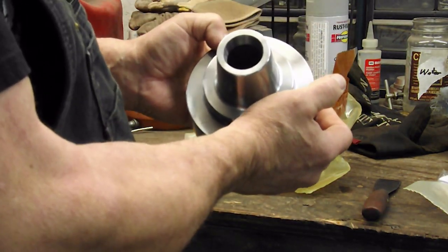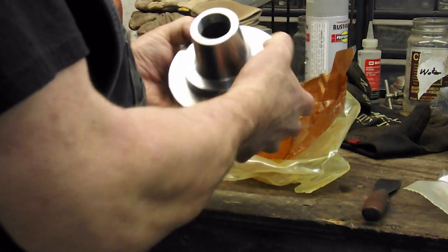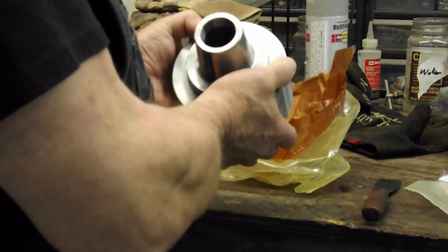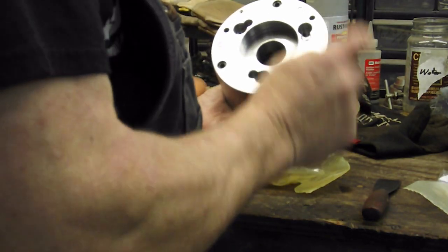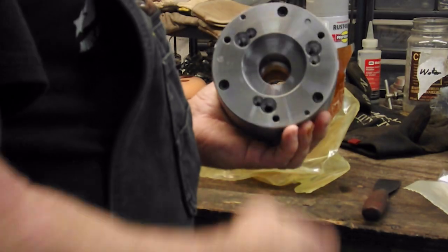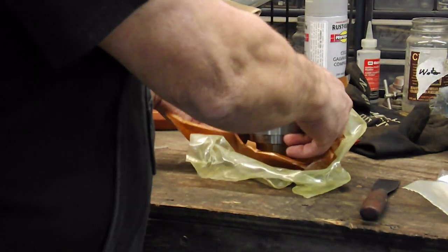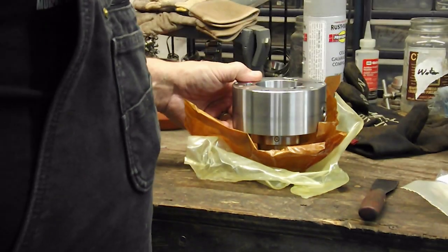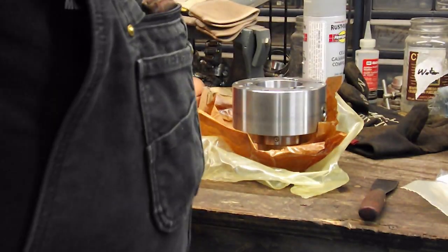It says CNC tooling solutions and this is a D14 5C collet chuck. I'm just going to wipe it off and then I'll get to mounting up the studs on the back so we can get it in the lathe.